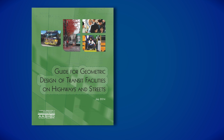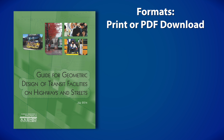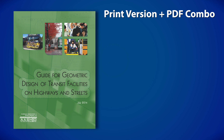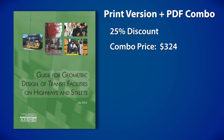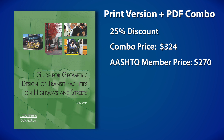The 424-page transit design guide is available in print and as a downloadable PDF at a cost of $216. The cost to AASHTO member organizations is $180. Customers who purchase both the print and downloadable PDF versions as a set will receive a 25% discount compared to the price of purchasing each format separately. The combination discount price is $324, or $270 for AASHTO member organizations.